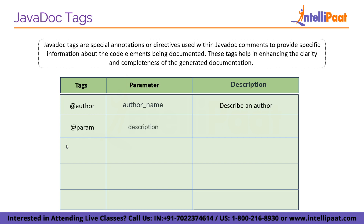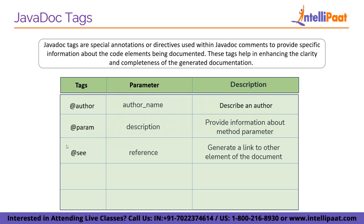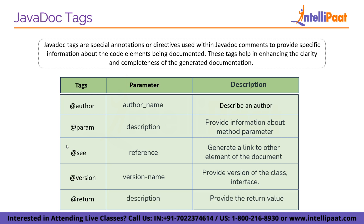After that we have @param, whose parameter is a description and it provides information about the method parameter. Then we have @see, whose parameter is a reference and it generates a link to another element of the document. We also have @version, whose parameter is the version name and provides the version of the class or interface. Finally, @return provides the return value description.